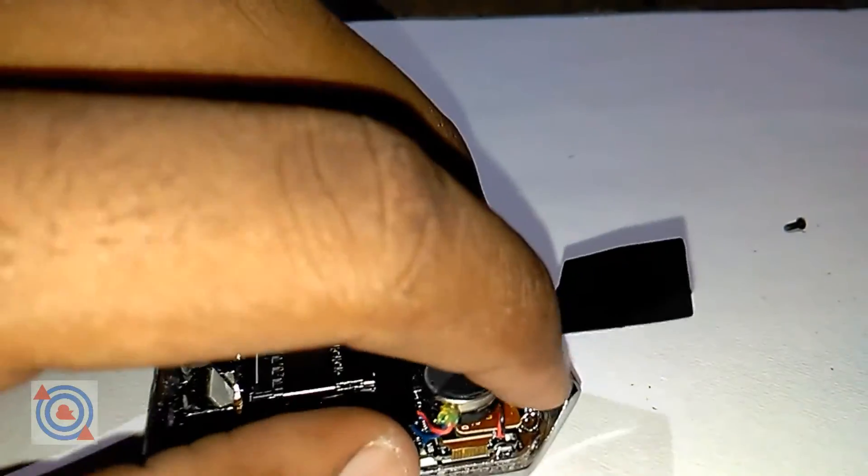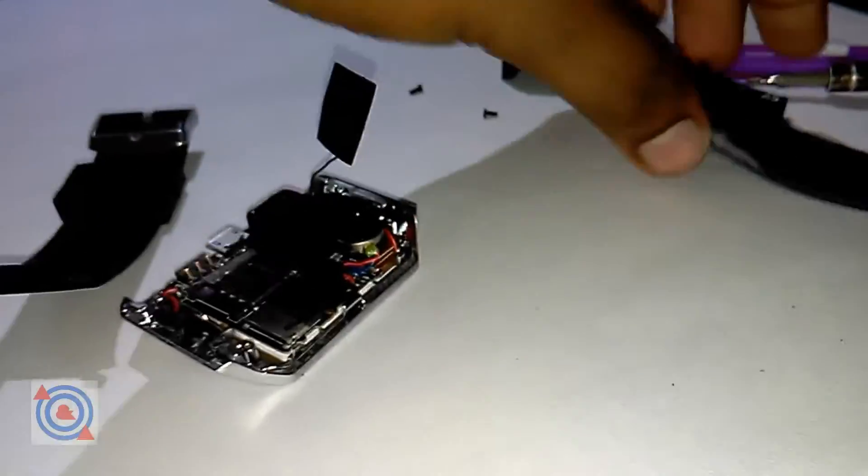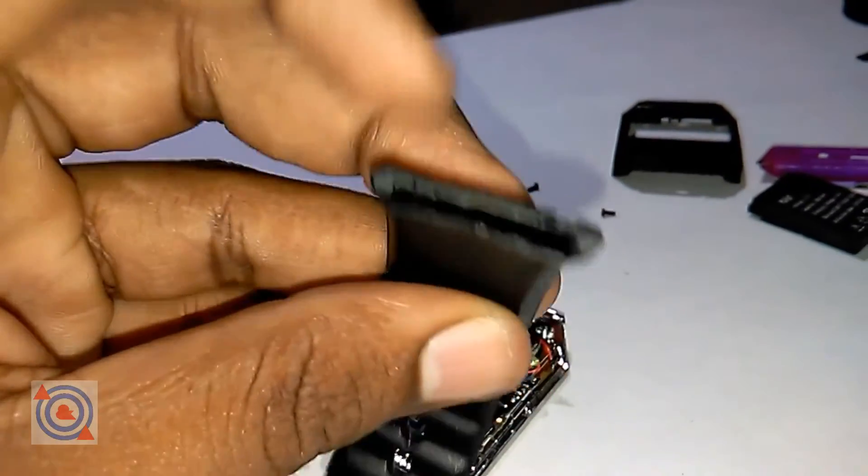This is the sensor - I think this is the pedometer sensor which is actually fitted in the strap, right at the hole there.